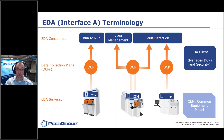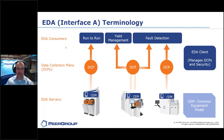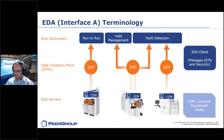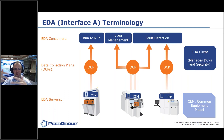Once I have those data collection plans loaded onto the tools into the EDA servers, any EDA consumer — up at the top of the screen — can actually activate and start requesting data from the tool based on those data collection plans. The beautiful part about EDA, and what gets around that major constraint of one-to-one, is that a single tool can talk out an EDA connection to multiple different listeners, multiple different data consumers or clients. And one client can also listen to an EDA stream from multiple different tools, giving you many-to-many connections.